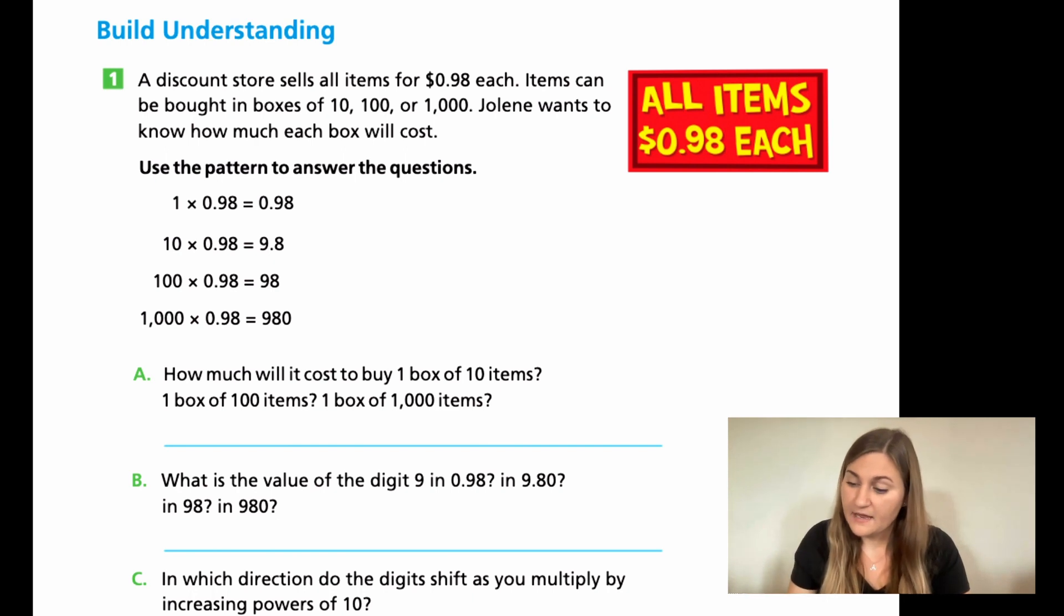Now, if I have it multiplied by 10, there's one zero, which means the decimal place moves once. So now it's between the nine and the eight. Look at the hundred. There's two zeros, which means that decimal place is going to move twice. Now the decimal place is technically at the end of the 98. And then with 1,000, there's three zeros. So that decimal place is going to move once, twice, three times. That open spot is now going to become that zero.